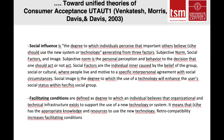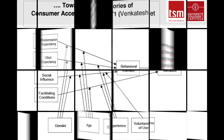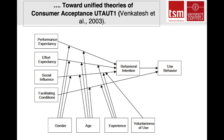Social influence is the degree to which individuals perceive that others believe they should use a new technology, due to social norms, image, and pressure. Social image is the degree to which use of technologies will enhance the user's social status within their social group. Facilitating conditions are defined as the degree to which an individual believes they have the appropriate knowledge and resources to use the new technology. Retro-compatibility increases facilitating conditions. In the UTAUT model, gender, age, experience, and voluntariness of use moderate the impact of the four key constructs on usage intention and behavior.